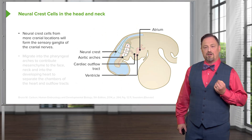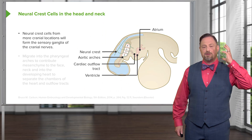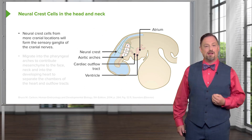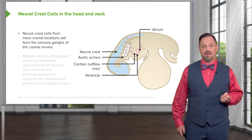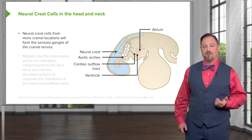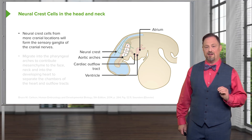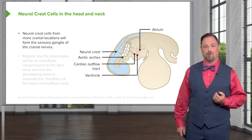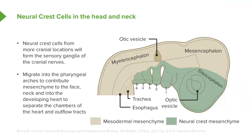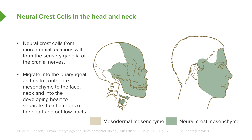Neural crest cells located in the head do something slightly different: instead of making posterior root ganglia, they make the sensory ganglia of the cranial nerves. Cranial nerves 5, 7, 9, and 10 all have associated sensory ganglia derived from neural crest cells. Neural crest cells also migrate into the pharyngeal arches of the neck and eventual face, creating the mesenchyme that contributes to bony and connective tissue structures there — in fact, quite a bit of our face is derived from neural crest mesenchyme.